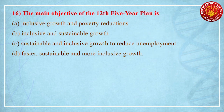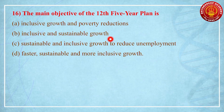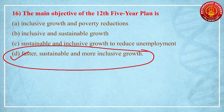Sixth question: the main objective of the 12th Five Year Plan is — options include inclusive growth and poverty reduction, inclusive and sustainable growth, sustainable and inclusive growth to reduce unemployment, or faster, sustainable and more inclusive growth. You should know the motives and objectives of at least 4 to 5 recent Five Year Plans. The correct answer is D: faster, sustainable and more inclusive growth — this is the most important objective of the 12th Five Year Plan.